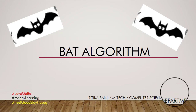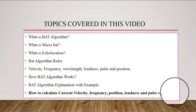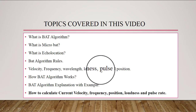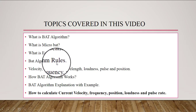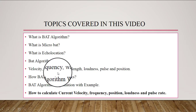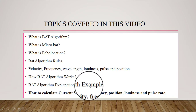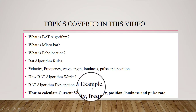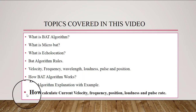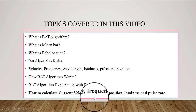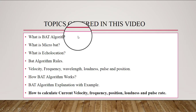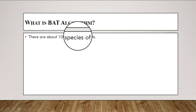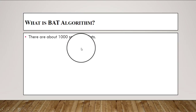In this video we will learn the bat algorithm. The topics covered include: what is bat algorithm, microbat, echolocation, rules for implementation, how the algorithm works, and an example with three bats implementing the algorithm to calculate frequency, velocity, position, loudness, and pulse rate. There are about a thousand species of bats, and the bat algorithm is based on the echolocation behavior of microbats.